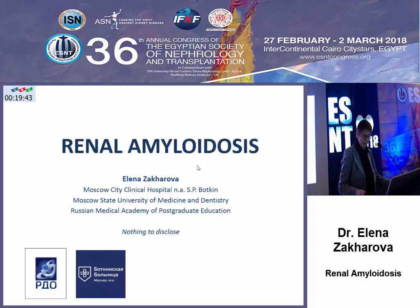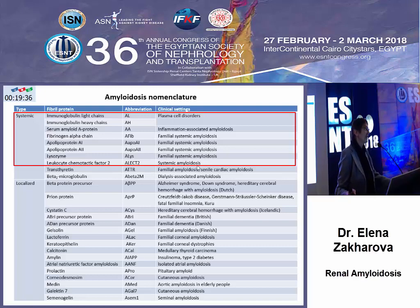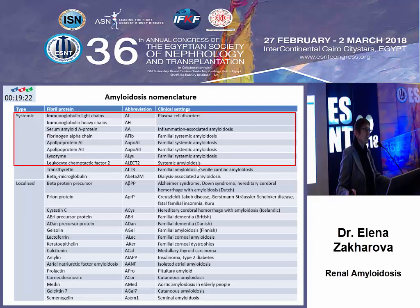Today I am supposed to talk about renal amyloidosis. We all know that there are more than 30 types of different amyloidosis, defined by the amyloidogenic proteins. We as nephrologists are so lucky that only eight of them affect kidneys.